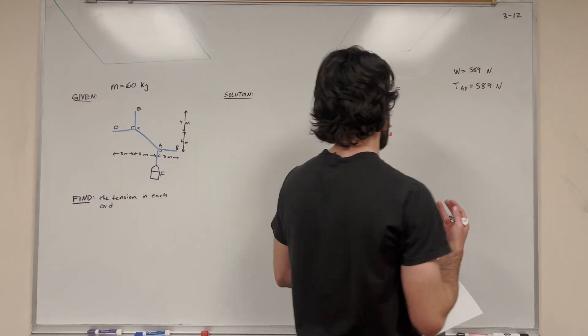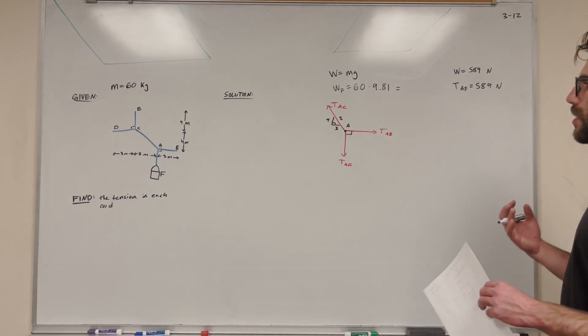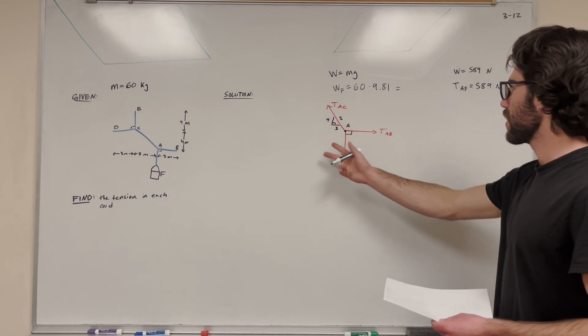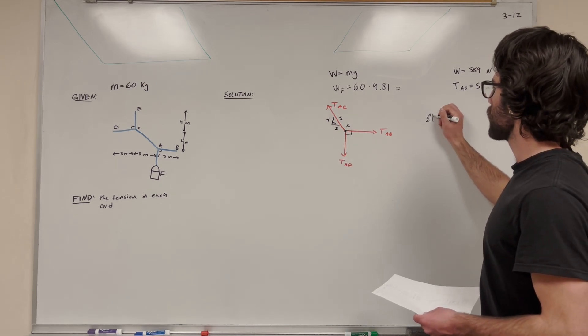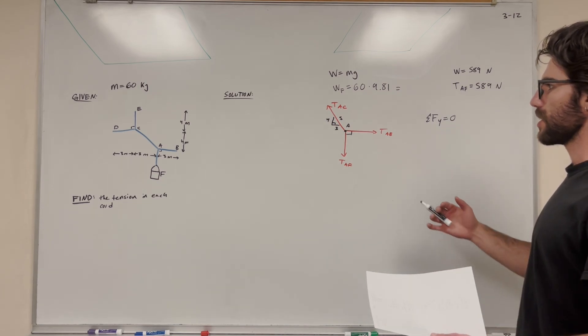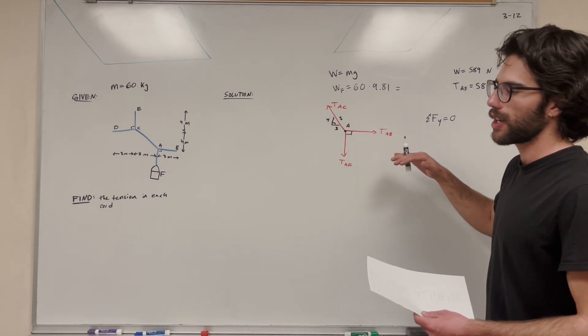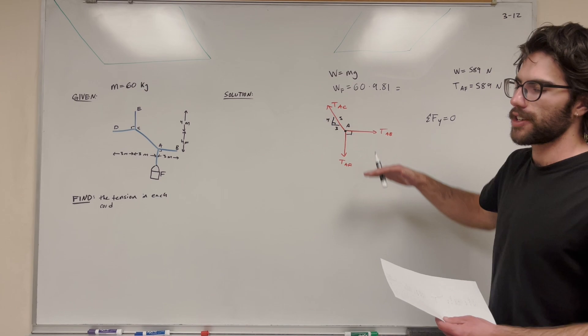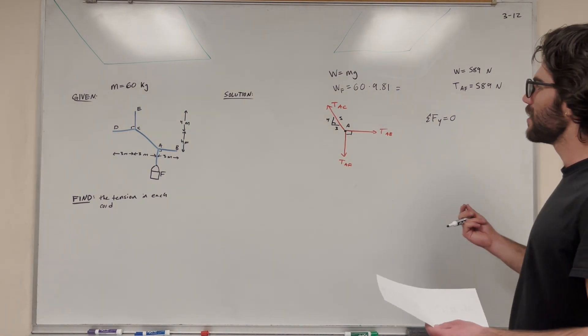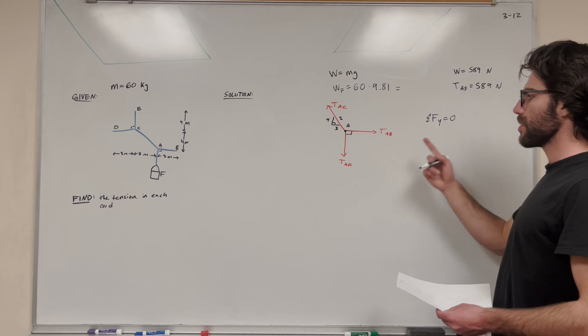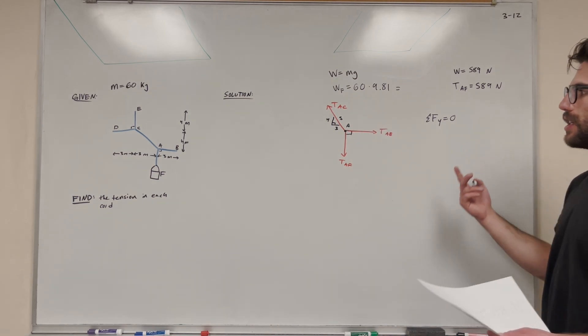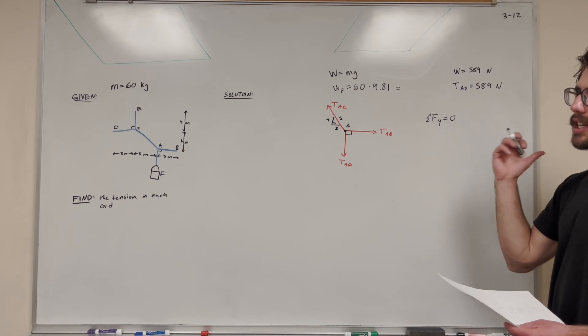And between AF and AB, we have a right angle. So now that we have this free body diagram, we can start to get to work. We have two equations we can write. Sum of the forces Y is equal to zero and sum of the forces X is equal to zero. Basically this is saying that the forces in the X direction are canceling and the forces in the Y direction are canceling, resulting in no movement. That's static. So let's do sum of the forces Y first because we know tension AF.